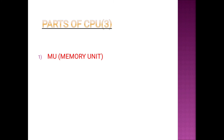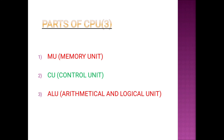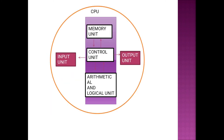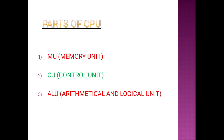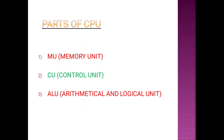The CPU is divided into three parts: MU (memory unit), CU (control unit), and ALU (arithmetical and logical unit). First we give input to the computer, then it is processed through these three parts of the CPU.